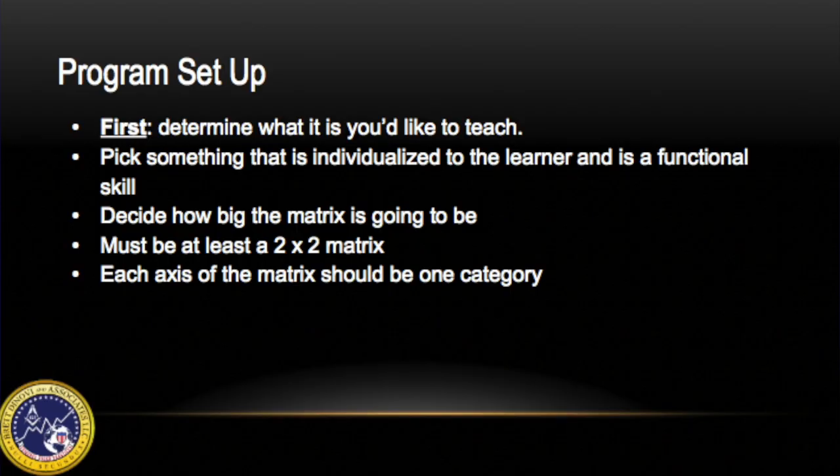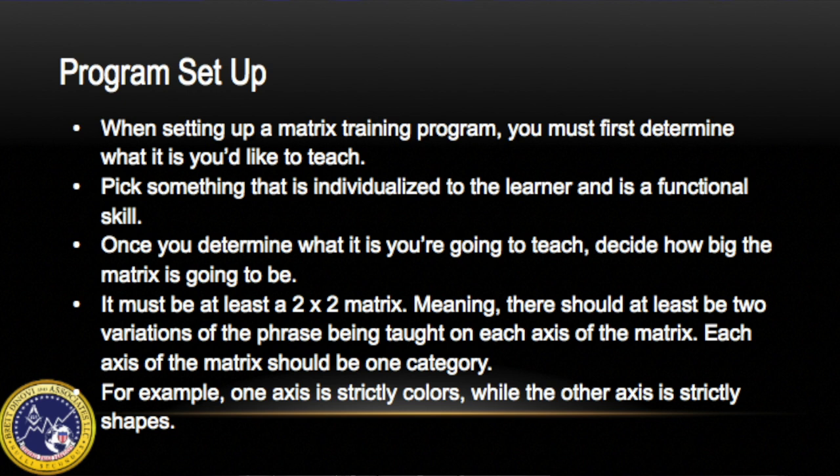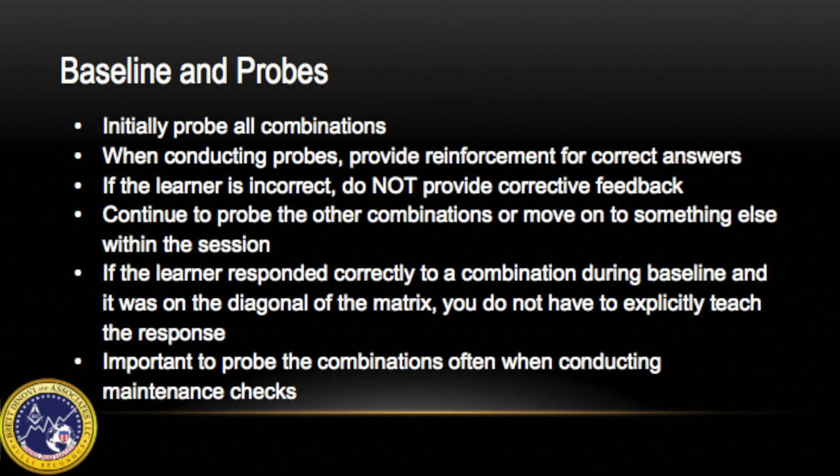When setting up a matrix training program, you must first determine what it is you'd like to teach. Pick something that is individualized to the learner and is a functional skill. Once you determine what you're going to teach, decide how big the matrix is going to be — it must be at least a two-by-two matrix, meaning there should be at least two variations of the phrase on each axis. Each axis of the matrix should represent one category. Once the matrix is set up, initially probe all combinations. When conducting the probes, provide reinforcement for correct answers. If the learner is incorrect, do not provide corrective feedback. You can continue to probe other combinations or move on to something else within the session.